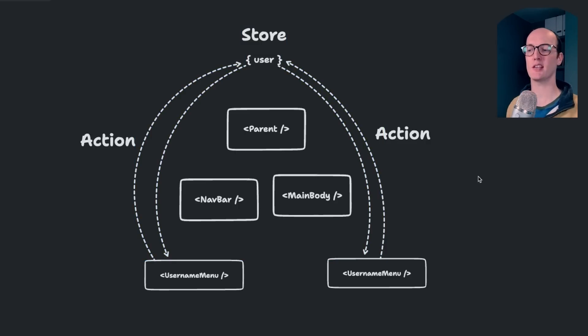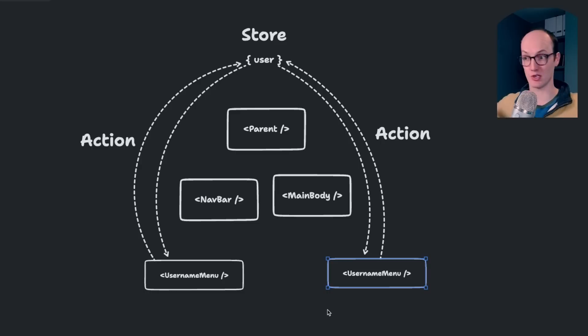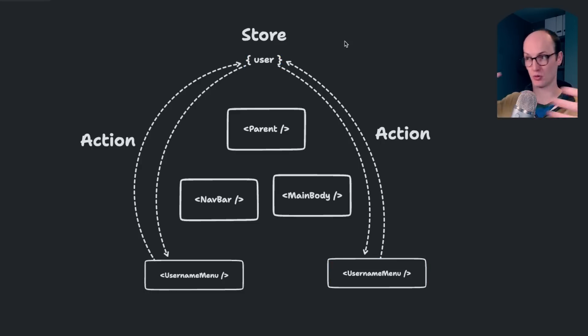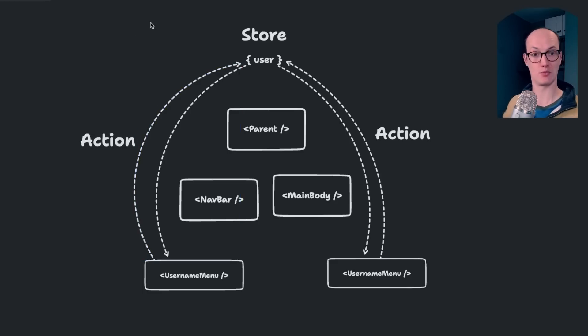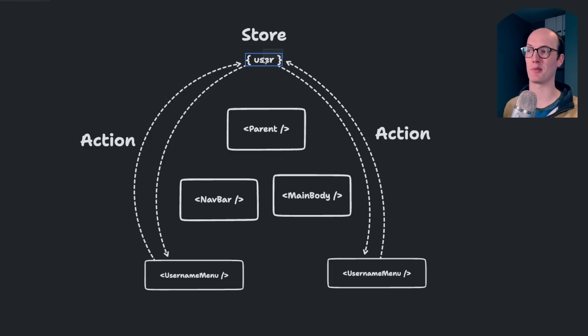This means that in theory your app is more testable — you can take the username menu and test it separately from the store to make sure it's sending up the correct actions, and you can test the store separately from the component to make sure the user responds in the right way. Because you're using one pattern to communicate with a single store, you can add really powerful logging and debugging capabilities to that store. There's also a Redux browser extension that lets you peek into your store and find out what changed and when — which is super nice and solves a whole series of problems when you have different bits of state interacting with each other.